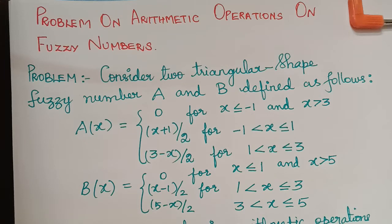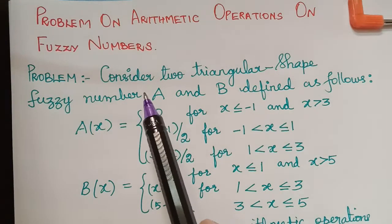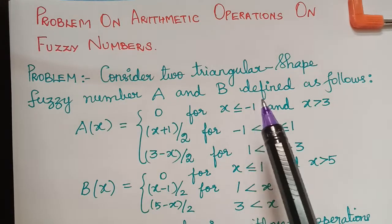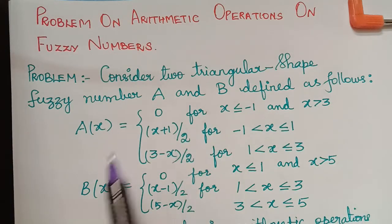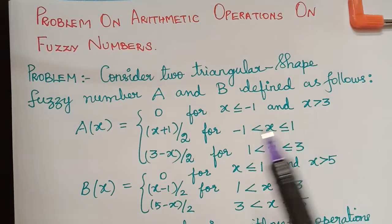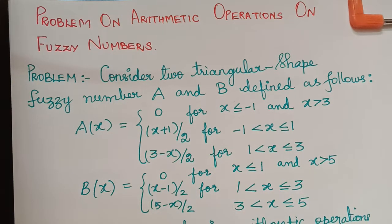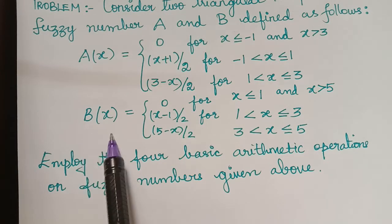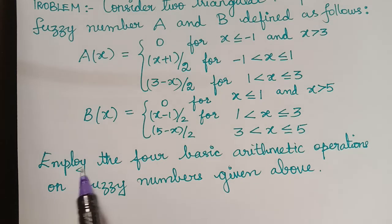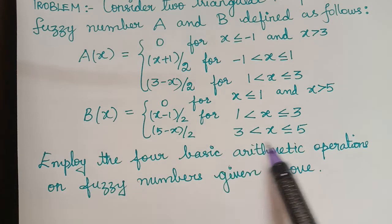Hello students. Now we shall solve a problem on the topic of arithmetic operations on fuzzy numbers. We consider two triangular fuzzy numbers A and B defined as follows: A(x) equals 0 for x ≤ -1 and x > 3; (x+1)/2 for x between -1 and 1; and (3-x)/2 for x between 1 and 3. Similarly we have the fuzzy number B(x). The question asks us to employ the four basic arithmetic operations on these fuzzy numbers.